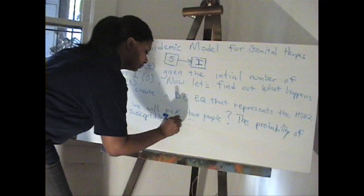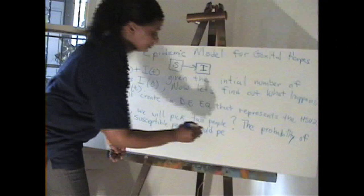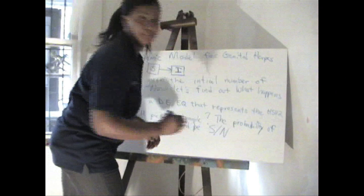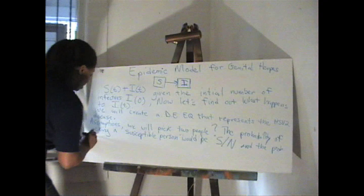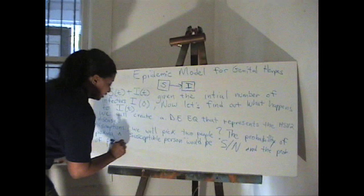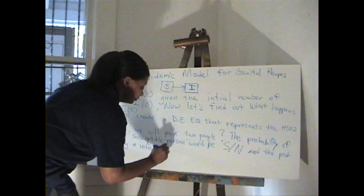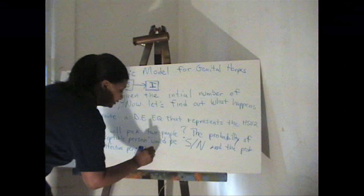We will pick two people for our assumption and our model. The question would be: what is the probability of picking a susceptible person? The probability of picking a susceptible person would be S over N, and the probability of picking an infective person would be 1 over N.